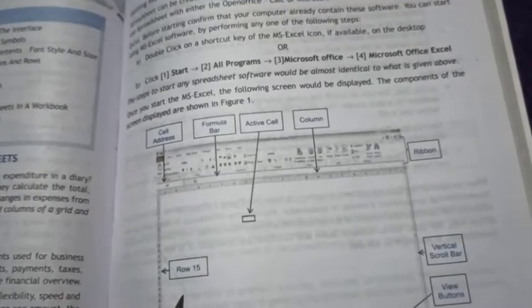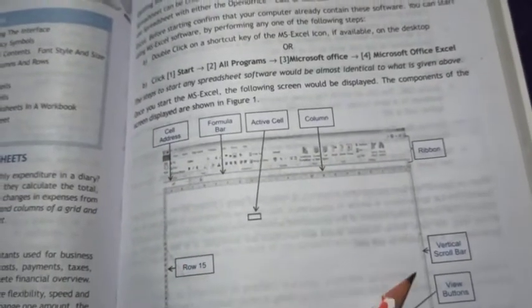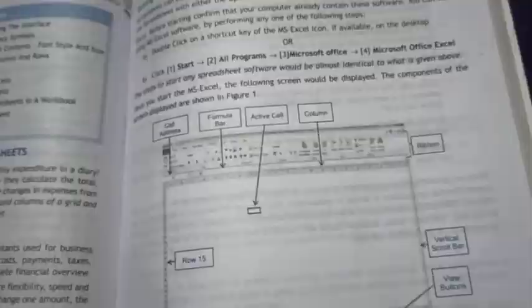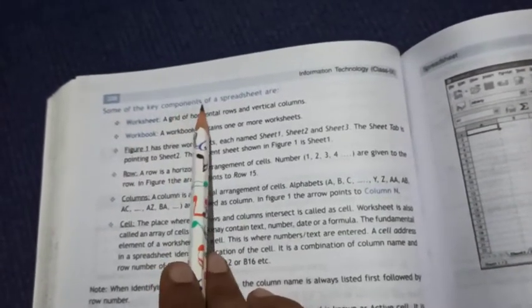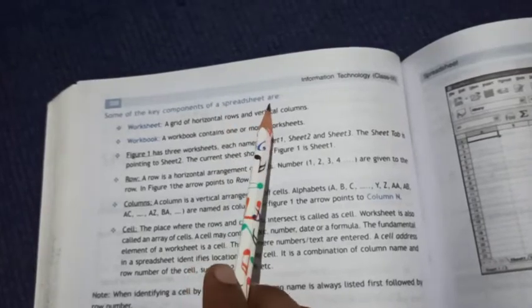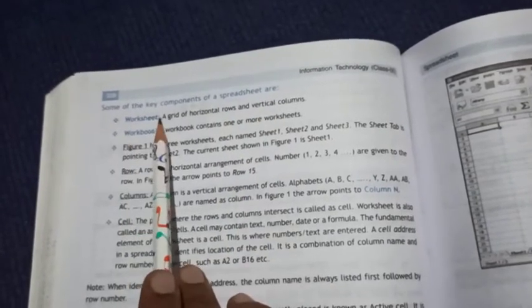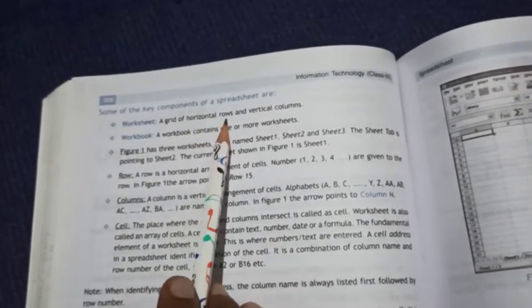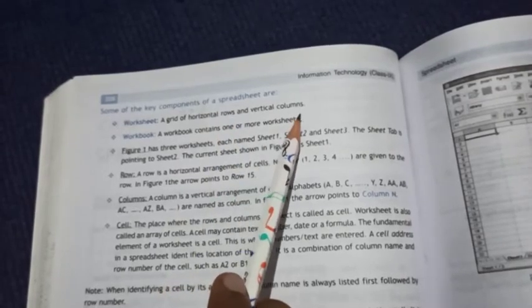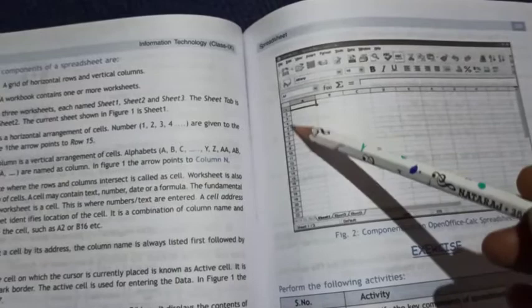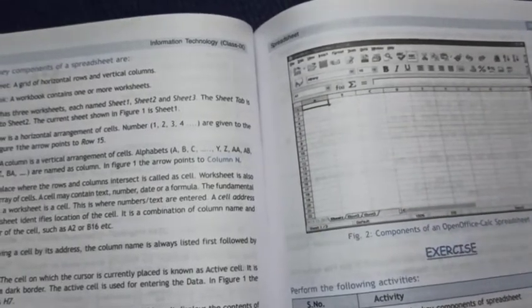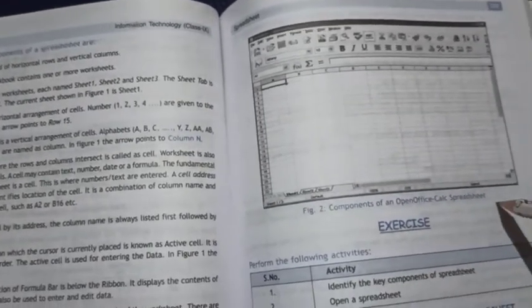Microsoft Excel will be opened on our screen. Now we will read some of the key components of the spreadsheet. First is worksheet: a grid of horizontal rows and vertical columns is called a worksheet. One complete page is called one worksheet.